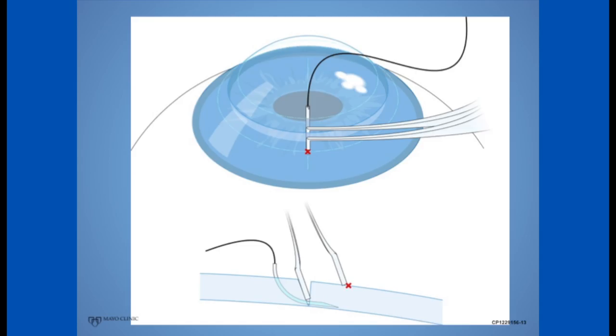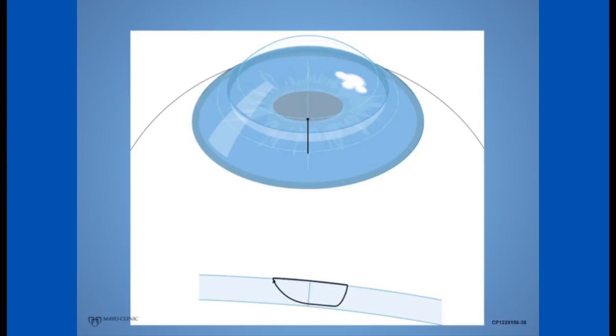In earlier videos, we learned how to drive the needle through the graft and how to drive the needle through the host so that it was deep, radial, and parallel to the posterior host surface.